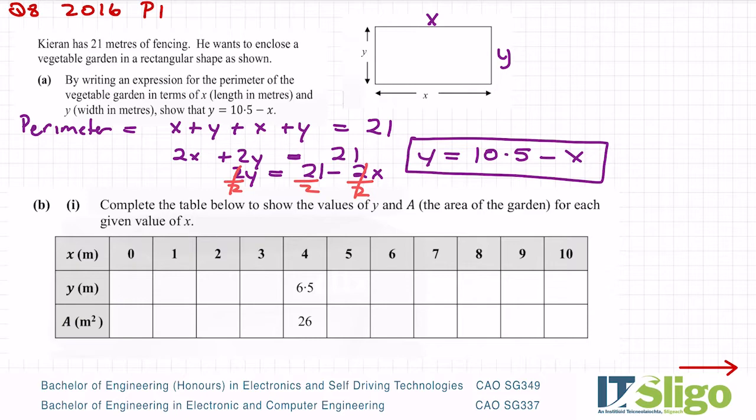Okay, part b(i): complete the table below to show the values of y and the area of the garden for each value of x. So they've given us a whole range of values for x, and we have to find the corresponding y. Okay, so for this first one here, y would be equal to 10.5 minus 0. In other words, I'm subbing in that 0 for x, so 10.5 minus 0 is 10.5. Okay, the area is length by breadth, so it's 0 by 10.5, so x by y is the area of the garden. So 10.5 by 0 will be 0. Okay, anything by 0 is 0.